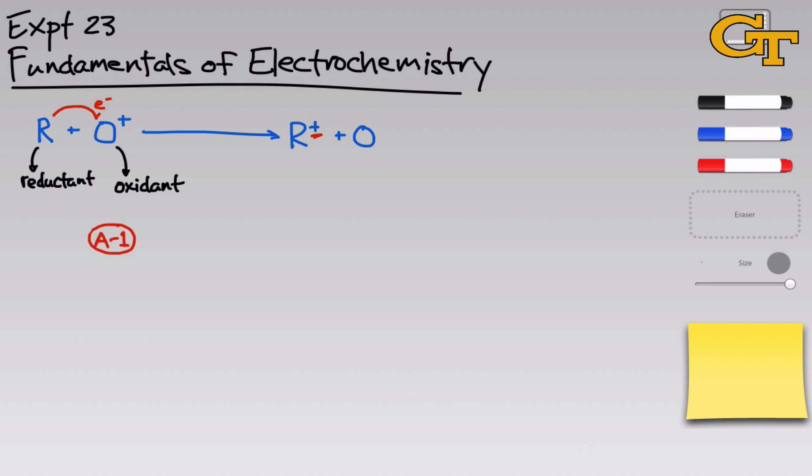In the first part of experiment 23, we'll be looking at a spontaneous redox reaction just occurring in solution. The specific reaction, which is a good example of this general paradigm, is two aluminum metal atoms react with three copper 2+ ions to form two aluminum 3+ ions and three equivalents of copper metal. On the whole, this represents the transfer of six electrons from the neutral aluminum to the copper 2+.